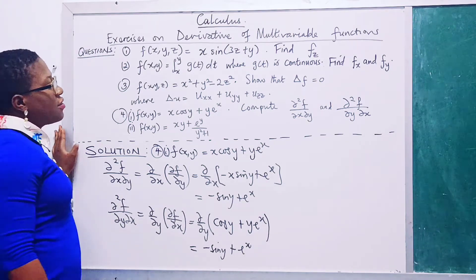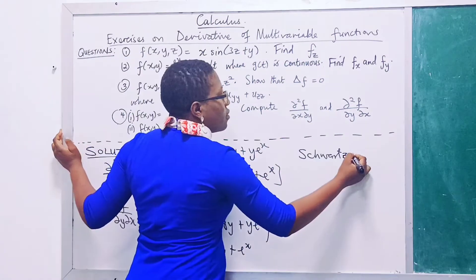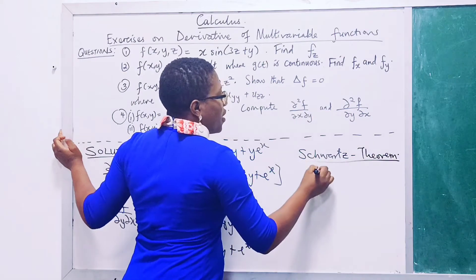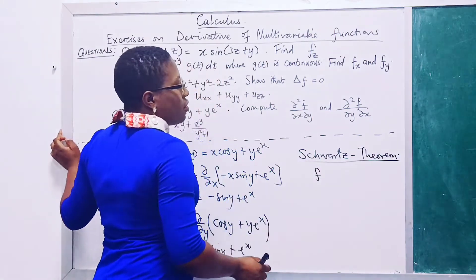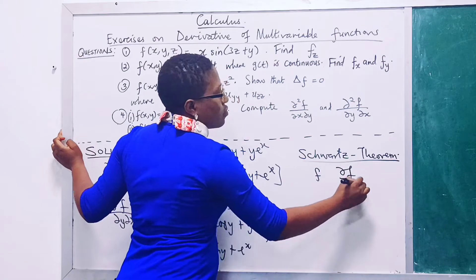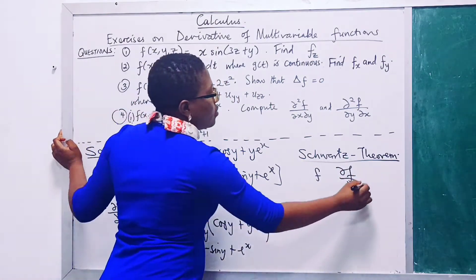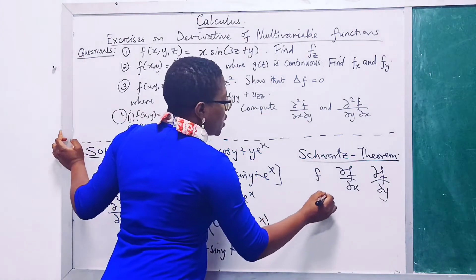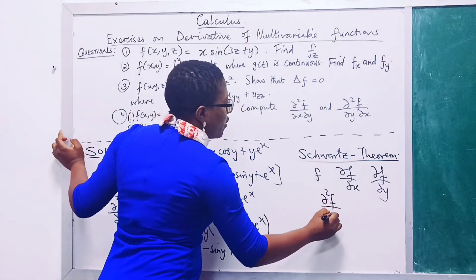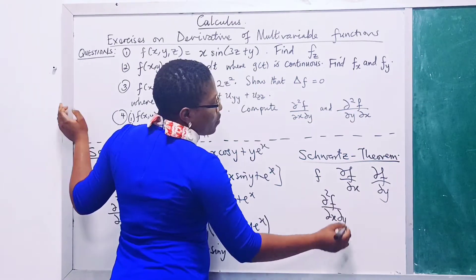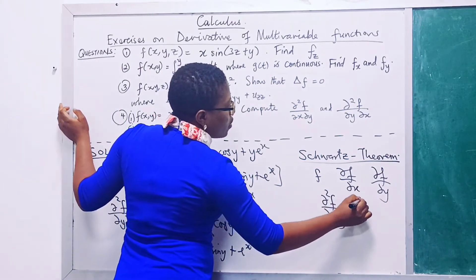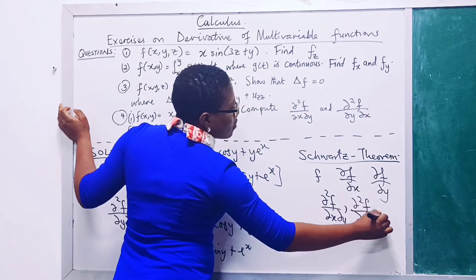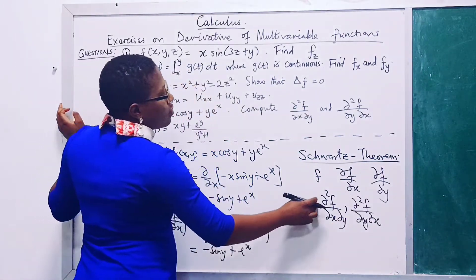The theorem that justifies this is Schwartz's theorem, which states that if f is continuous, and the partial derivatives with respect to x and y are continuous, and the mixed partial is continuous, then the two mixed partials are equal.